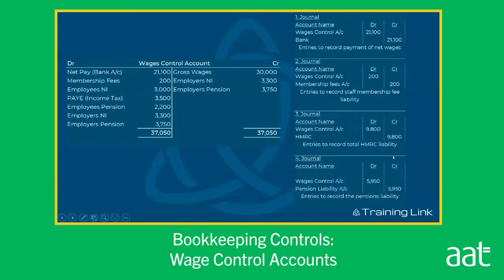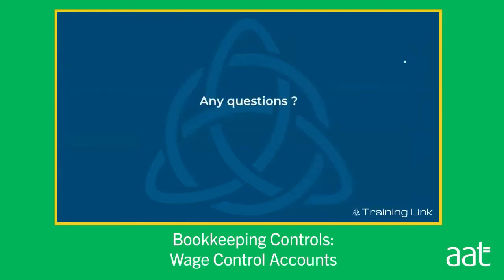There's also a summary in journal entry format, showing the four main entries that look at distribution — I've left off the original entry for wages expense, but you can look back at the start to see that. Any questions, please ask Jayden.